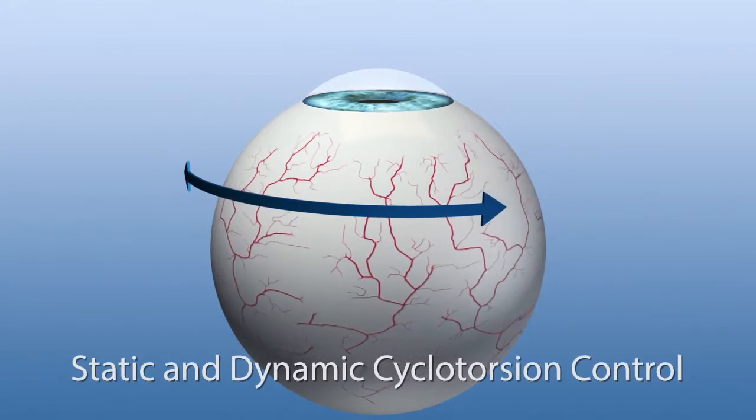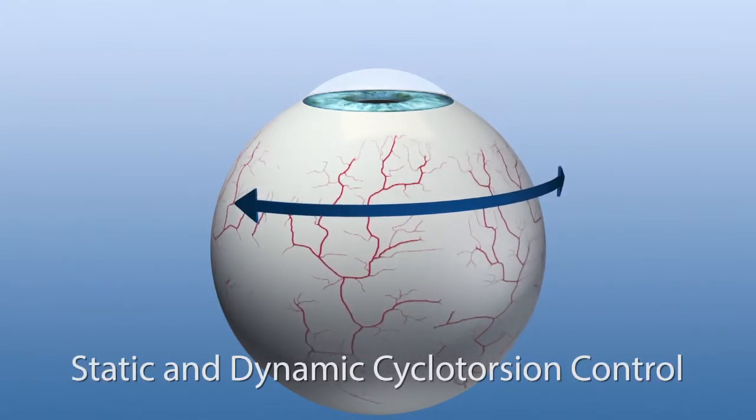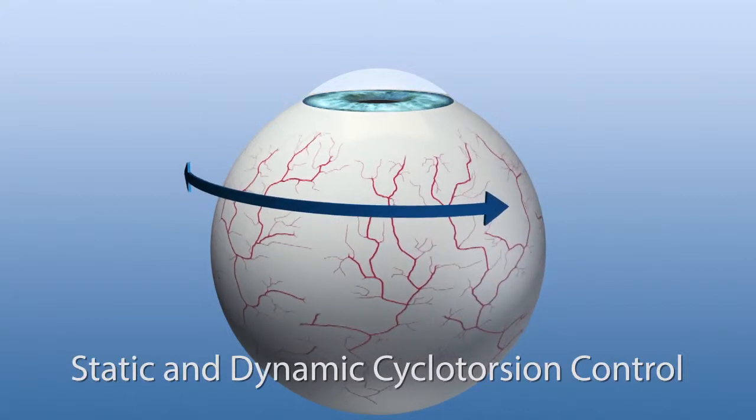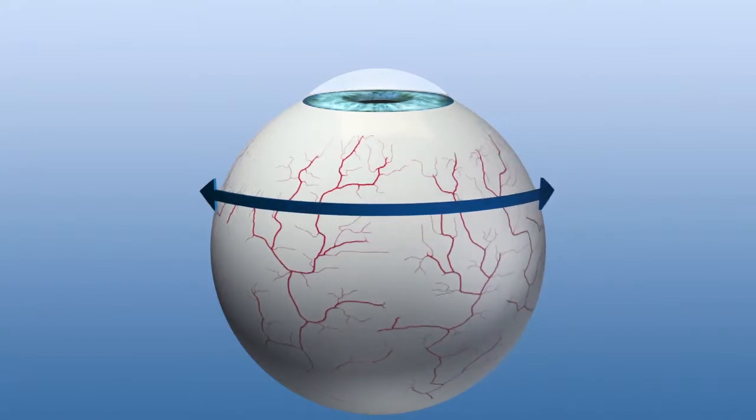Static and dynamic cyclotorsion control by the Schwind Amaris compensates for torsional differences of the eye between upright and supine positions of the patient, as well as torsional movements of the eye during laser treatment.